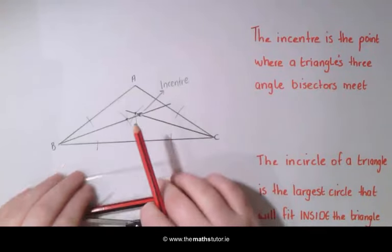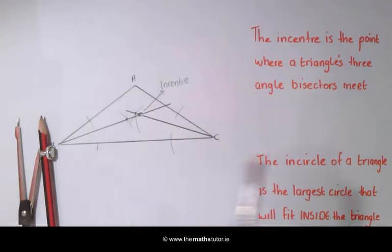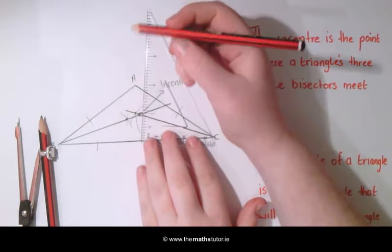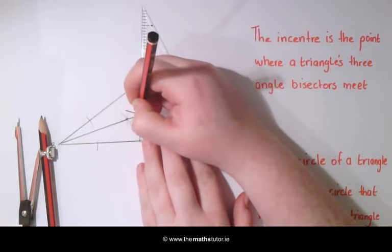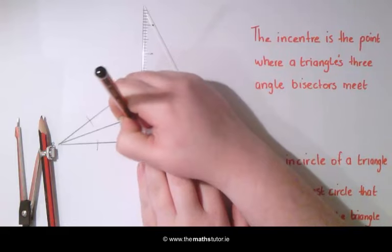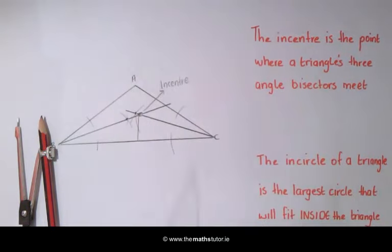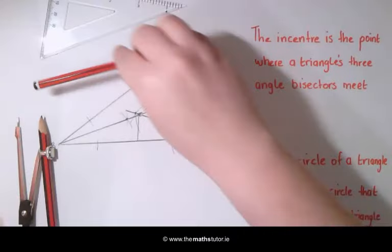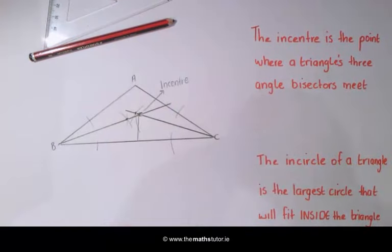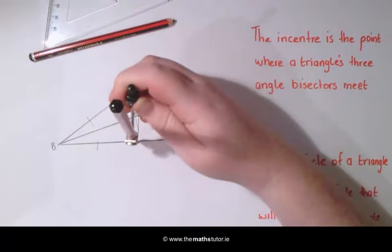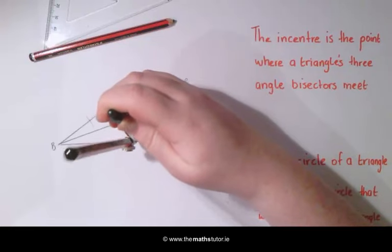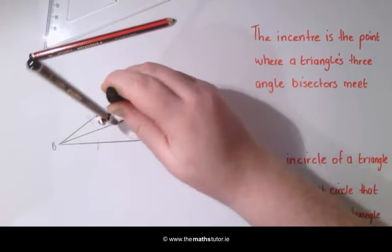So we are going to draw a perpendicular line from our in-center to the opposite side. This is our radius. We are going to then take our compass and using this width we are going to draw a circle inside the triangle.